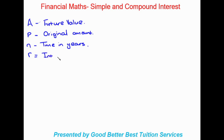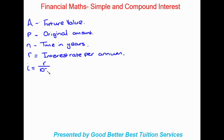'R' is going to be our interest rate per annum, meaning per year. Then we have 'I', which represents the fraction form of our interest rate. Our interest rate always comes as a percentage, so we convert it into a fraction for use in an equation — I equals R over 100. In questions you'll also see 'p.a.' which stands for per annum.